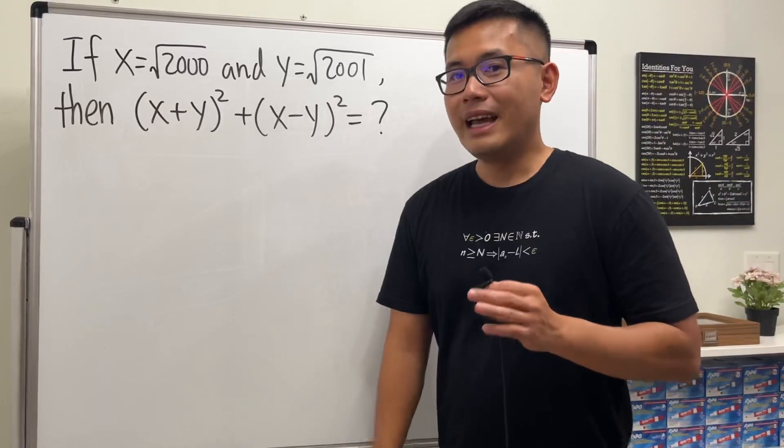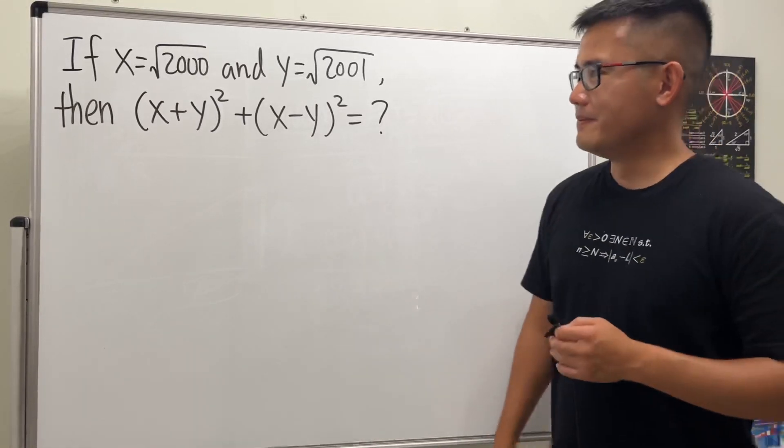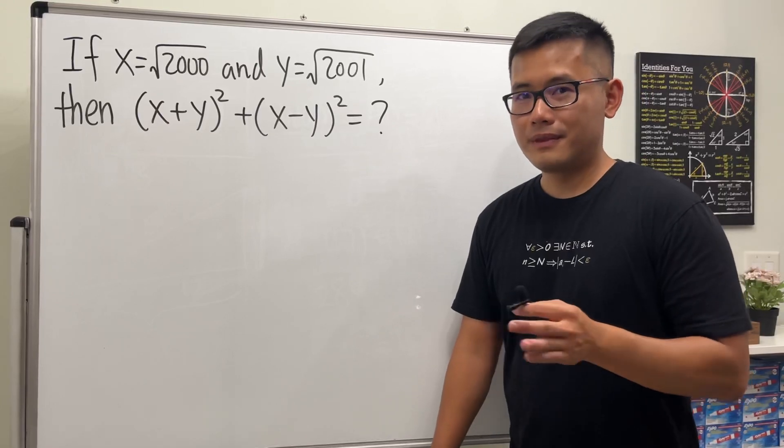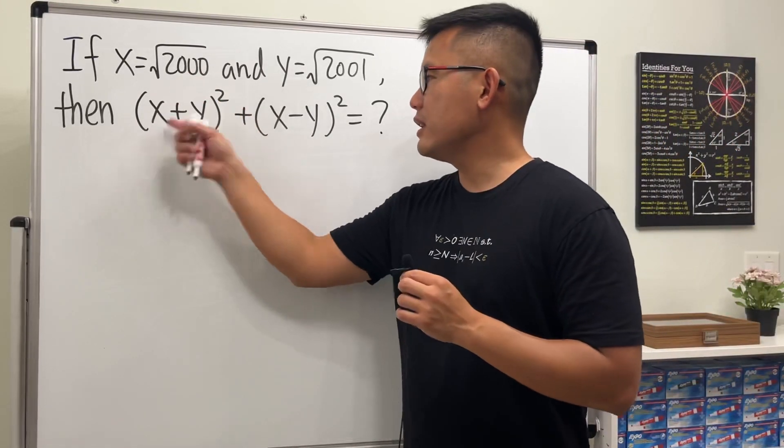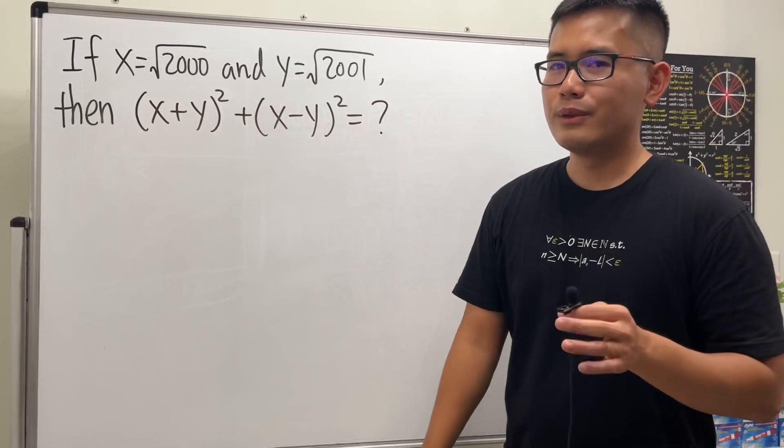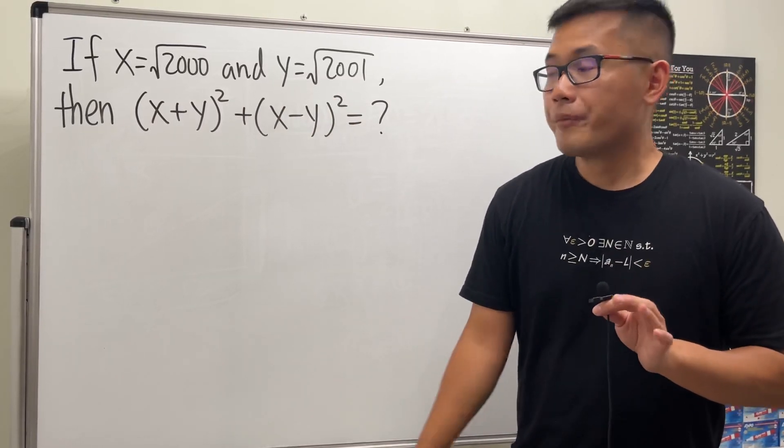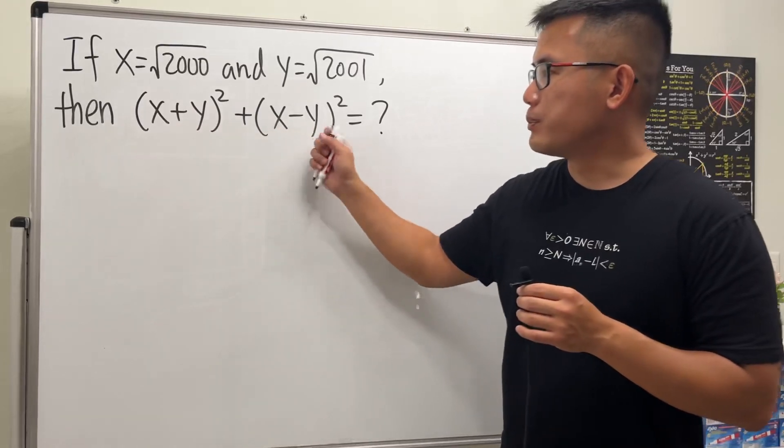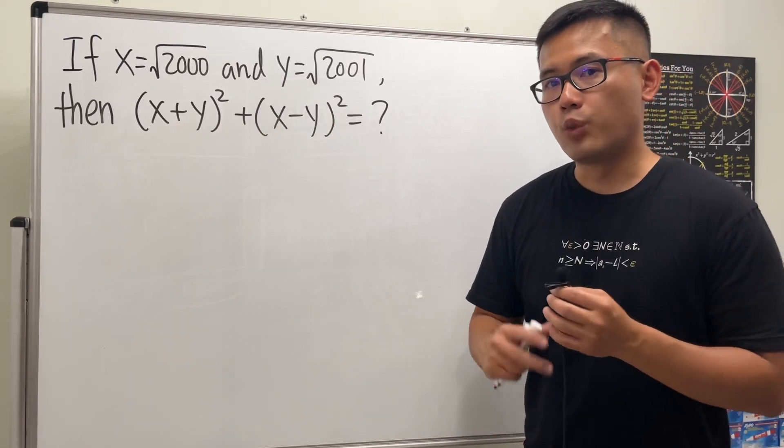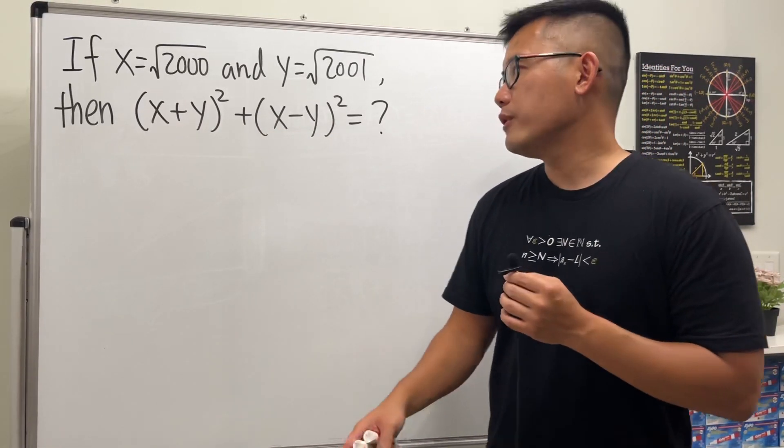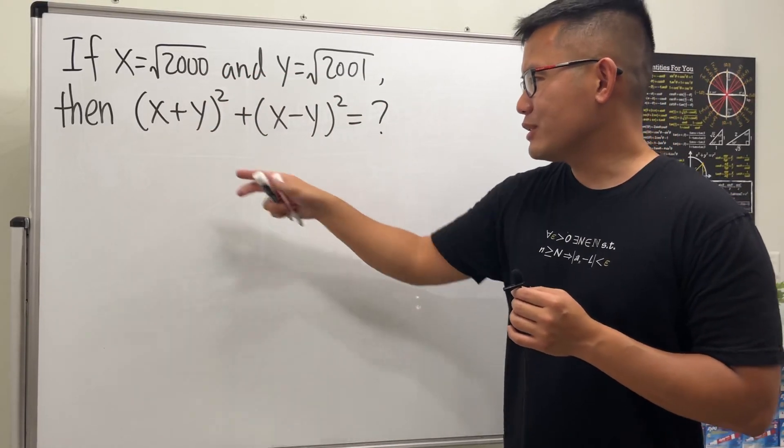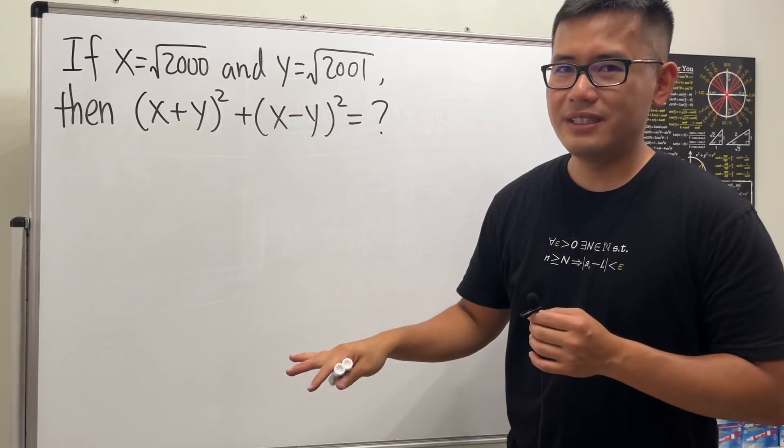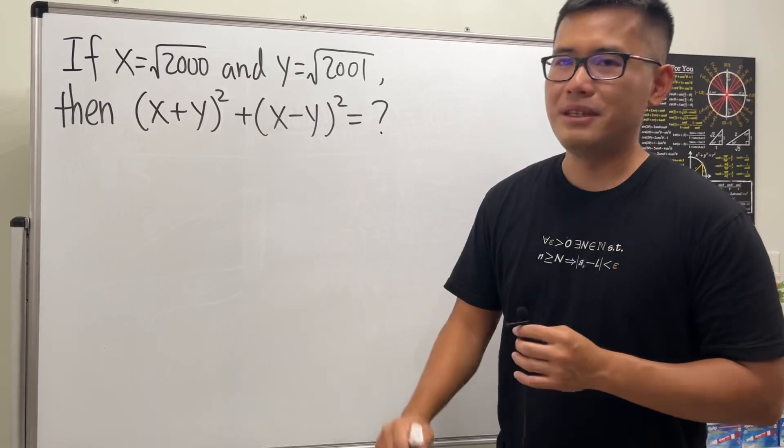Pretty good question for algebra anyway. Pause the video and try this first. Done? Good. All right, so of course put this here, put this here. Here's the deal - if we are given an algebraic expression, it might be a better idea to work it out algebraically. So in fact, you can have square root of any other numbers. Do the expression like this first, and then plug in a number at the end. It might be easier that way.